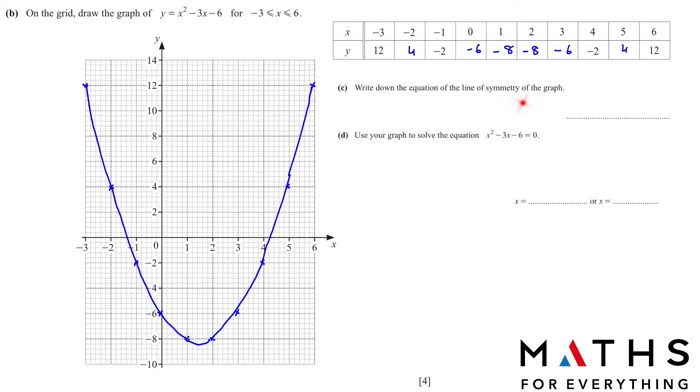Part (c): Write down the equation of the line of symmetry of the graph. That is this point here, the X value of this point. It cuts the X axis when x is 1.5. So that is our line of symmetry. Line of symmetry is always x = something.